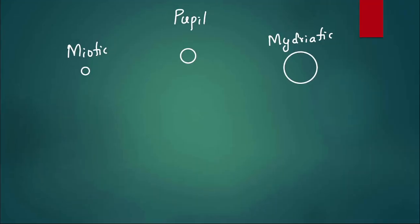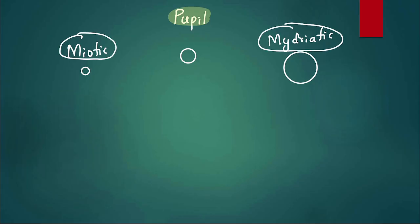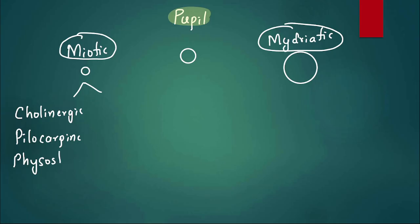Whenever they ask a question about the pupil, remember: the pupil can be miotic or mydriatic. Which drugs cause a miotic pupil? It can be cholinergic drugs like pilocarpine or physostigmine. Second, miosis can be caused by alpha blockers. Miosis is also seen with opioids like morphine.